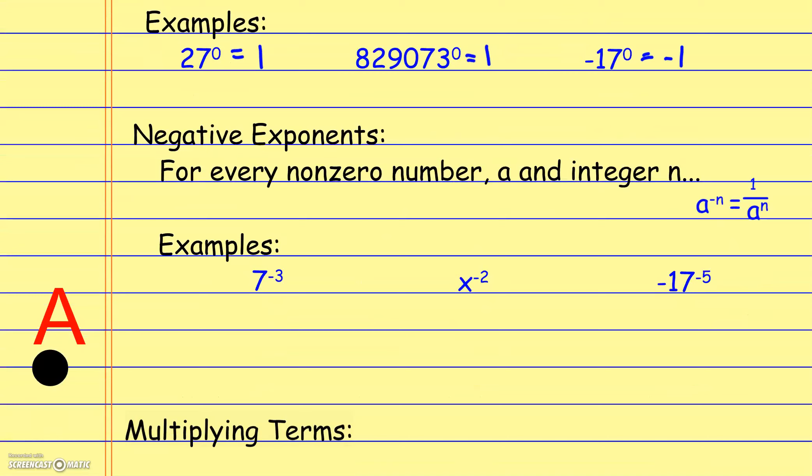Negative exponents essentially turn things into fractions. A negative exponent is another way to express division. For any non-zero number, if I have a to the negative nth power, that's the same as 1 over a to the nth power. So with negative exponents, we flip the fraction, and that's how we turn a negative exponent into a positive exponent.